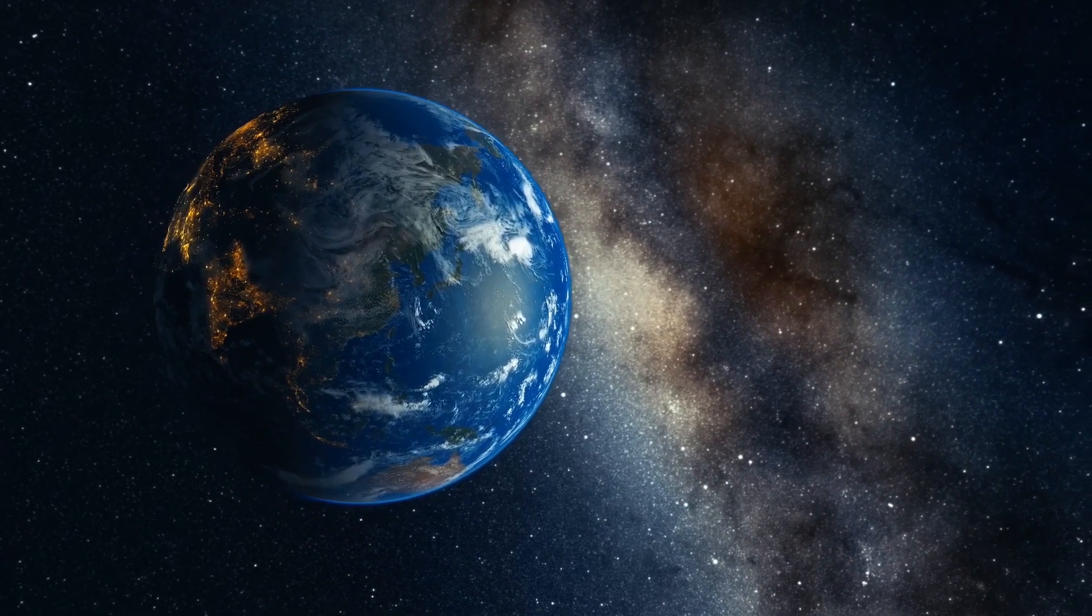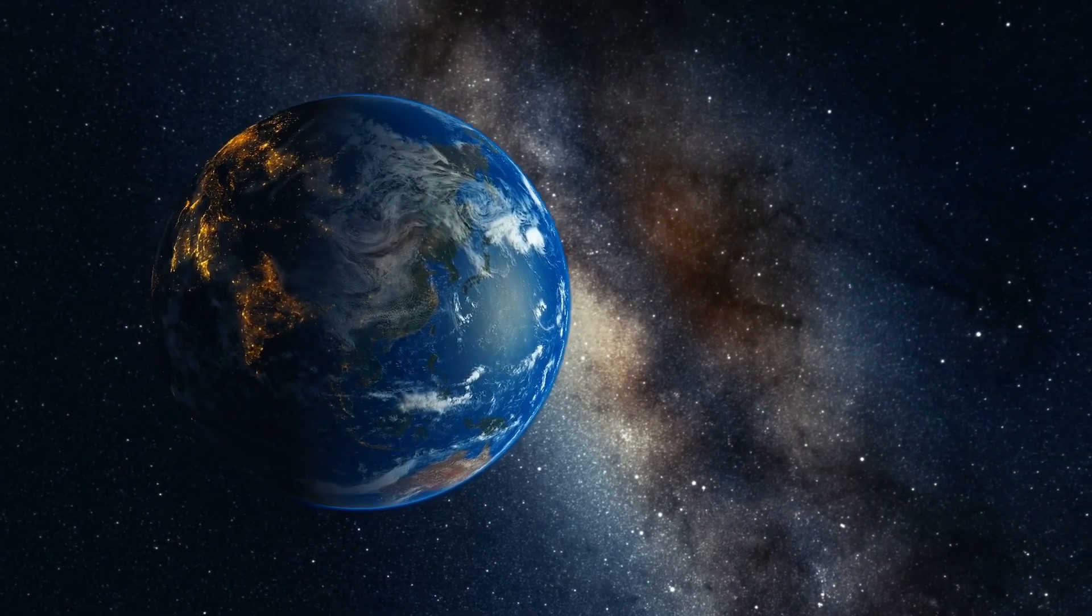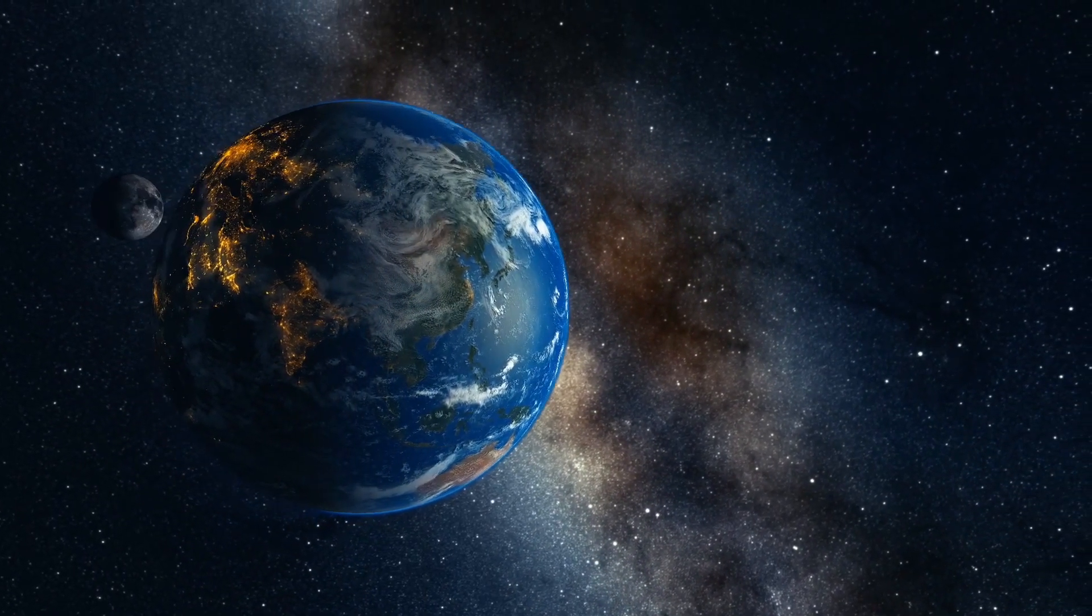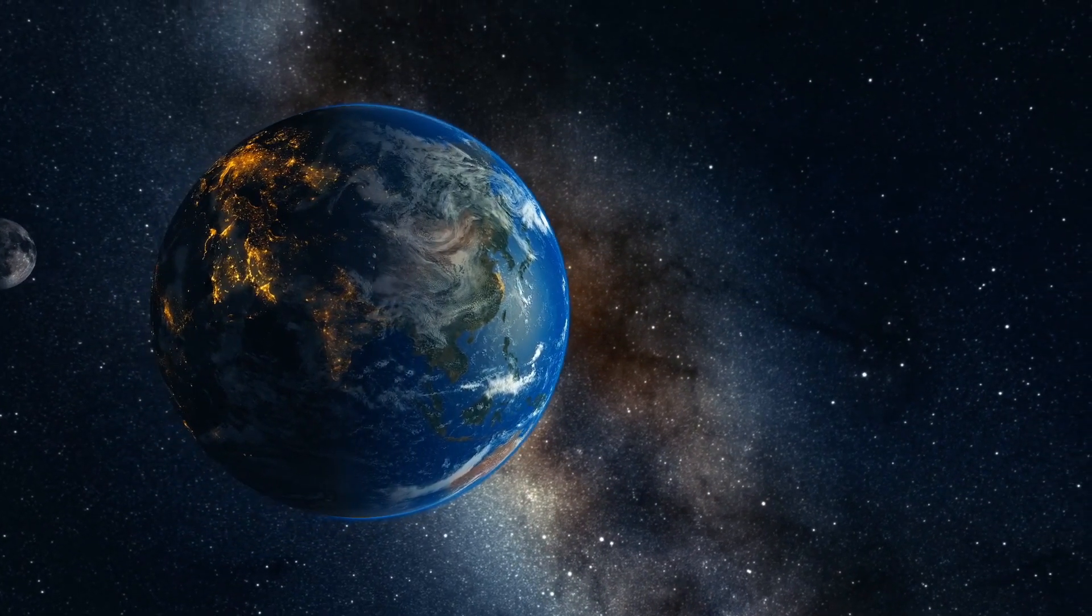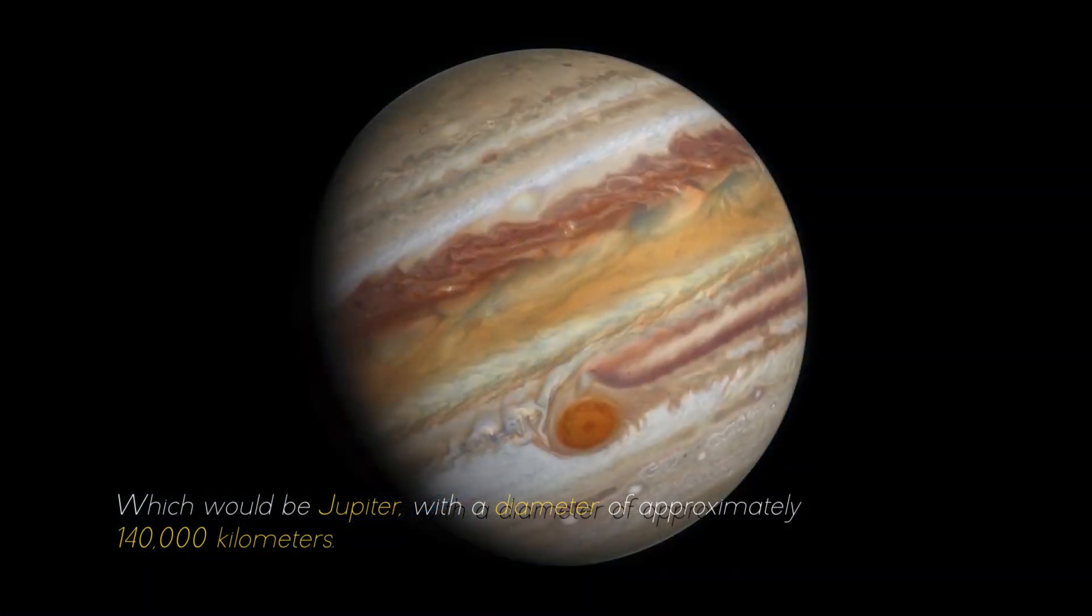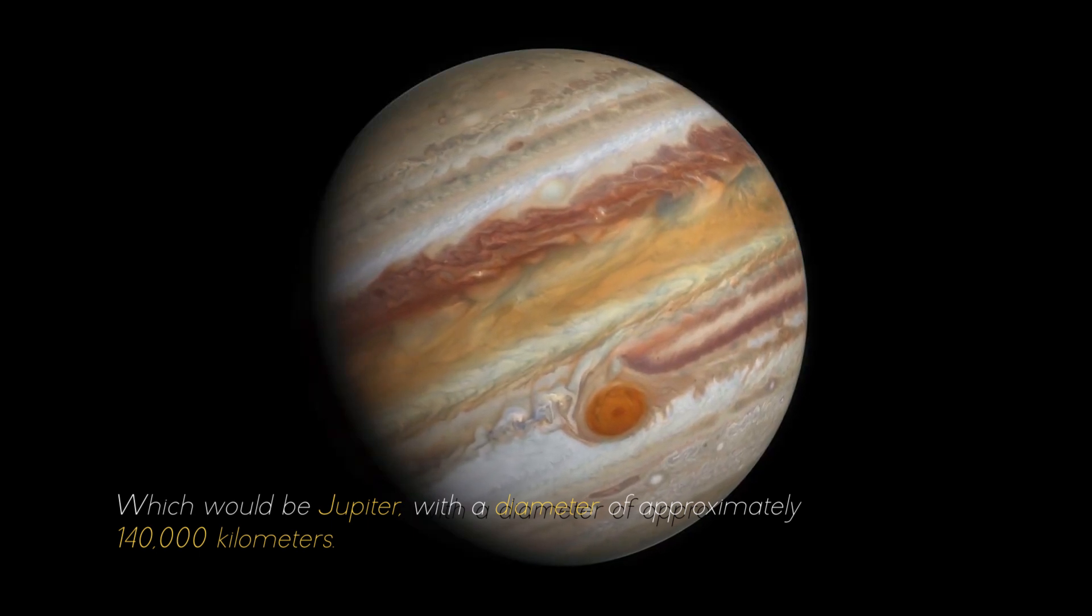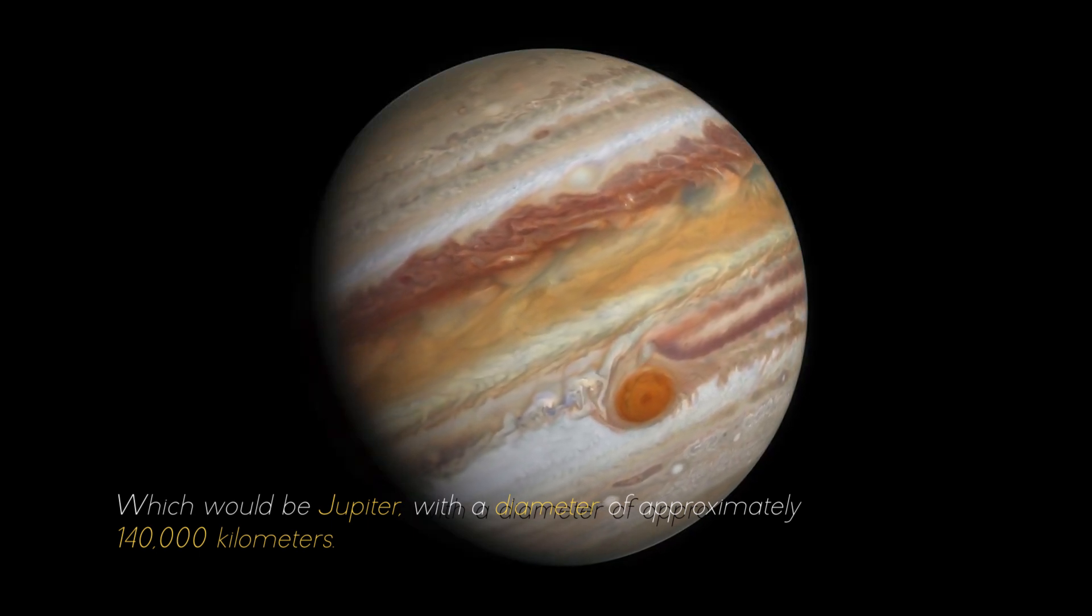If we compare it with the largest planet in our solar system, it would look like a ping-pong ball in front of a soccer ball, which would be Jupiter, with a diameter of approximately 400,000 kilometers.